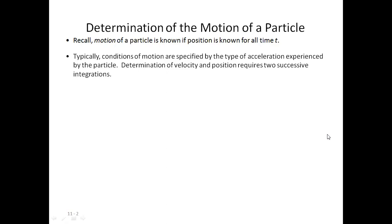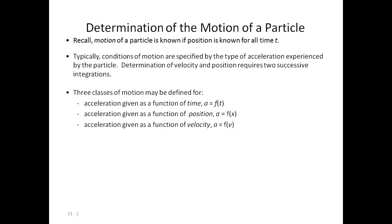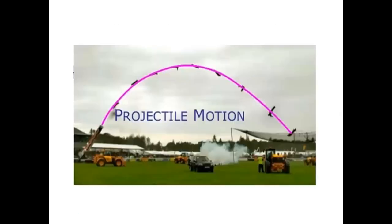Typically, conditions of motion are specified by the type of acceleration experienced by the particle. Determination of velocity and position requires two successive integrations. Three classes of motion may be defined for x: if acceleration is given as a function of time t, if it is a function of x, or if acceleration is a function of velocity, that is a equals f of v.